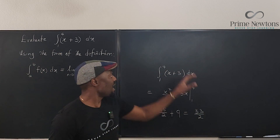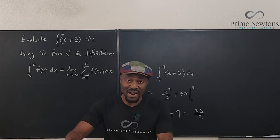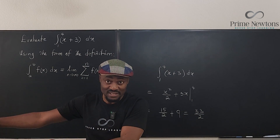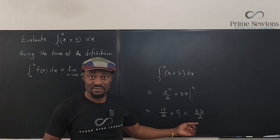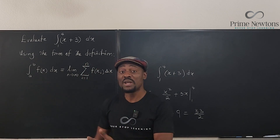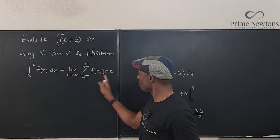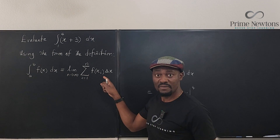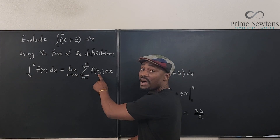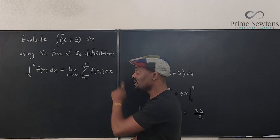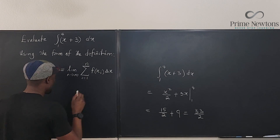But say I'm not allowed to go this way — I need to use the form by doing infinite approximation. Well, that's what we need to investigate. As long as you know the definition, and you know what x sub i and delta x mean, you'll get your answer. Let's get those definitions out.